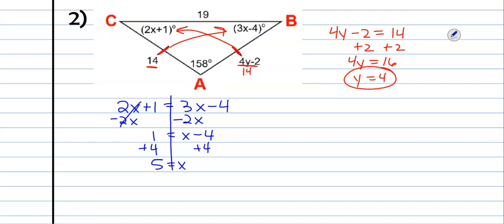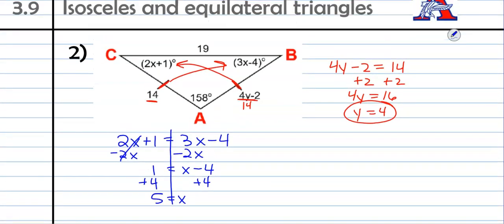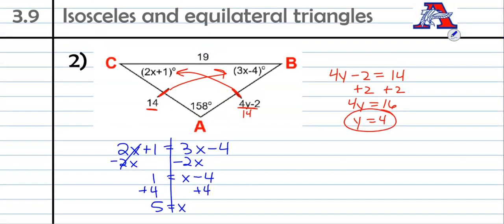And then last step is to plug that back in to figure out what those missing angles are. So I'm going to do 2 times 5 plus 1. 2 times 5 is 10 and 10 plus 1 is 11. So just 11 degrees. And then over here, we're going to have 3 times 5 minus 4. Well, 3 times 5 is 15 and 15 minus 4 is 11 degrees.